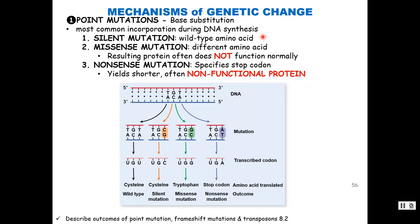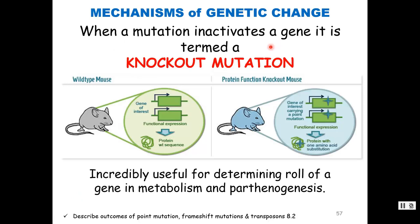To summarize point mutations: silent mutations show no difference in phenotype, so you still have wild type. Missense mutations give a different amino acid — probably not functioning normally, so you'll see a difference in phenotype. Nonsense mutations introduce a stop codon, producing a short protein, and you'll definitely see a change in phenotype.